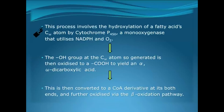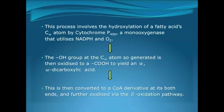The omega oxidation proceeds via a hydroxylation reaction at the C-omega carbon atom by cytochrome P450, a monooxygenase enzyme that utilizes NADPH and oxygen. The OH group generated at C-omega is next oxidized to a carboxylic acid group so that the compound becomes an alpha-omega dicarboxylic acid. It is then converted to the coenzyme A derivative and further oxidized by the usual beta-oxidation pathway.